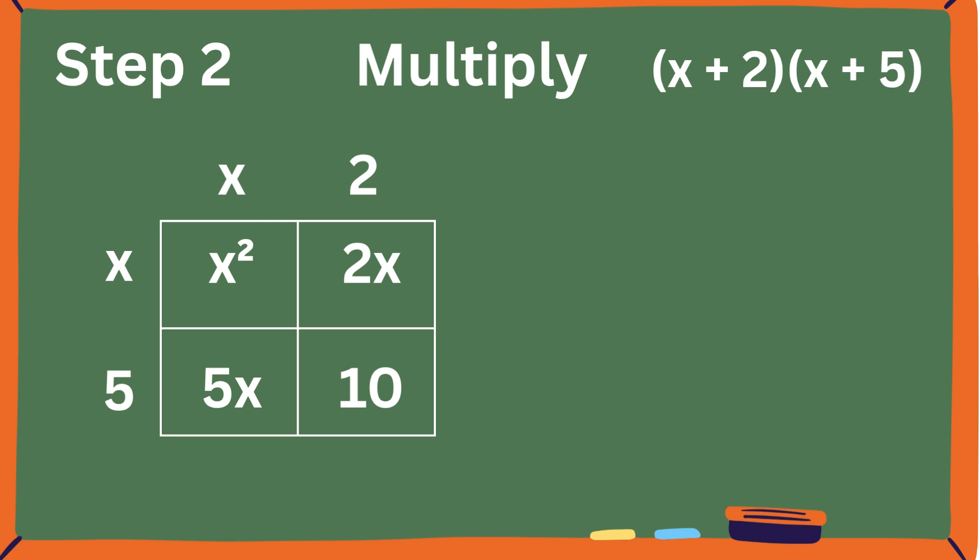x squared plus 2x plus 5x plus 10. Simplify the expression by collecting like terms, and you get x squared plus 7x plus 10. That's it. You just multiplied two binomials in seconds, and no need to remember weird acronyms.